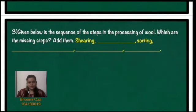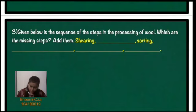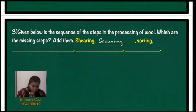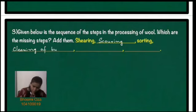The third question gives certain steps in the processing of wool and asks for the missing steps. The first step is shearing, the second step is scouring, the third step is sorting, and the fourth step is cleaning of fibres.